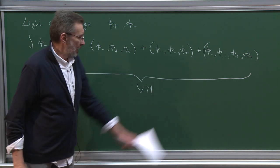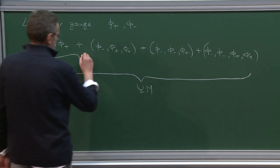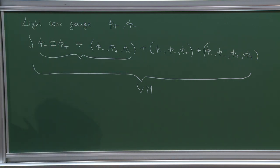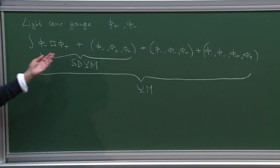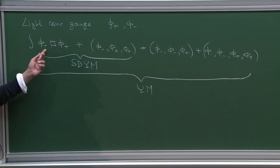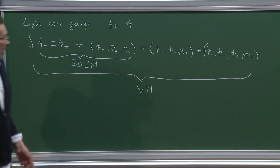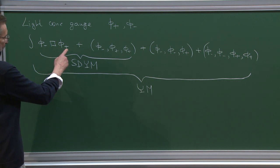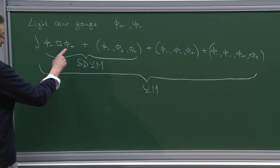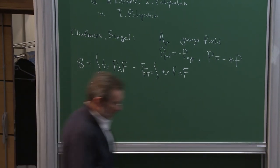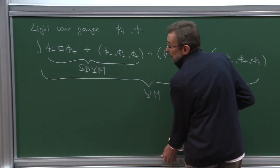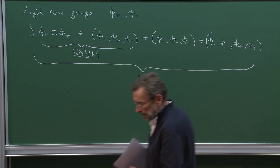If we just drop the last two interaction terms and leave only the first two, this corresponds to the light-cone gauge formulation of self-dual Yang-Mills. We see exactly that we leave only terms linear in φ− and nonlinear in φ+. The equations for φ+ coming from here, which are nonlinear, are exactly the self-duality equations. Therefore, the statement that this theory is a linearization with respect to half the degrees of freedom makes sense.